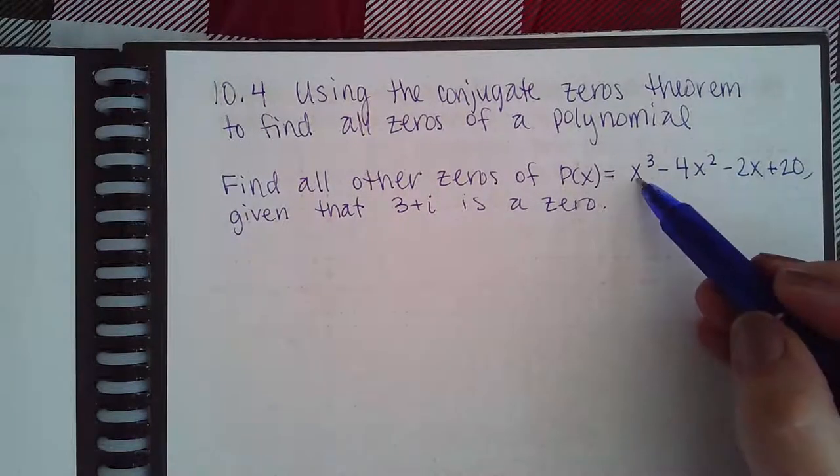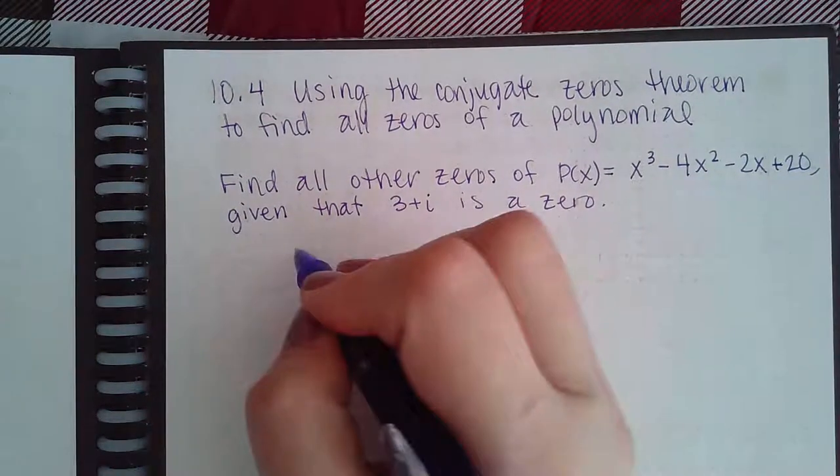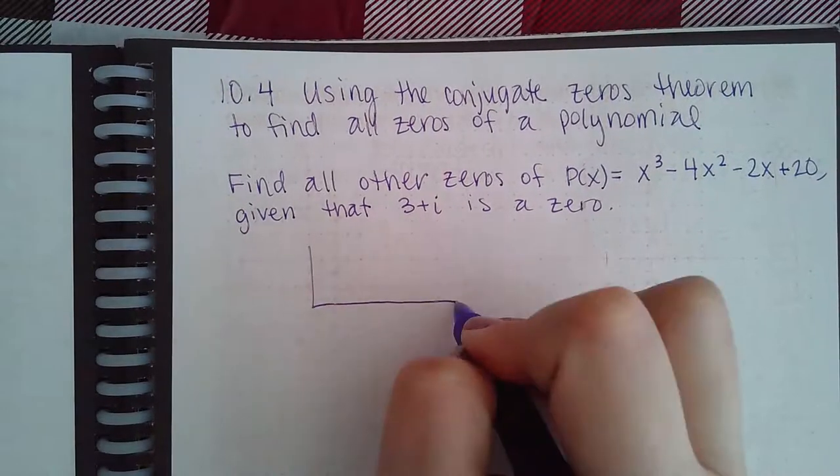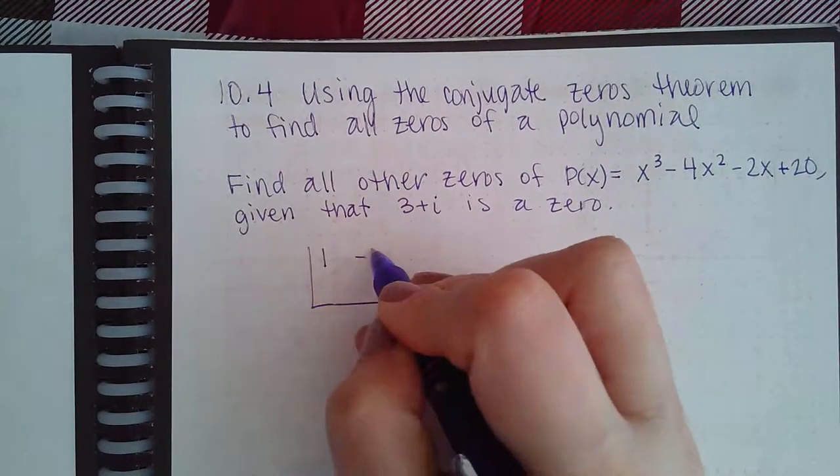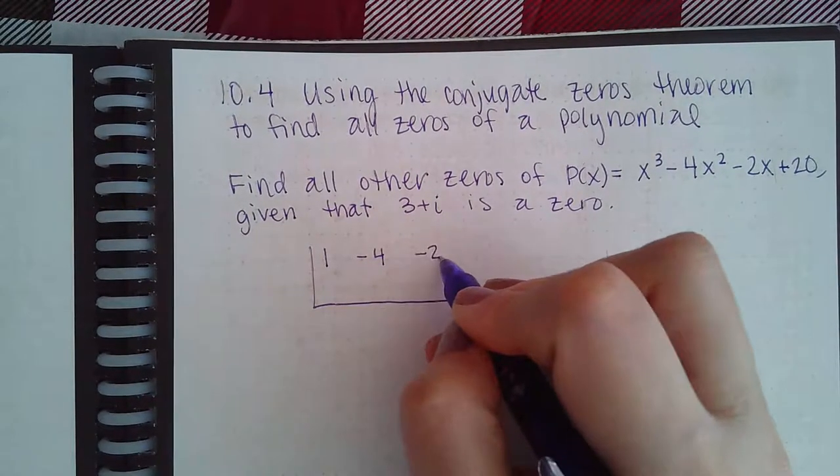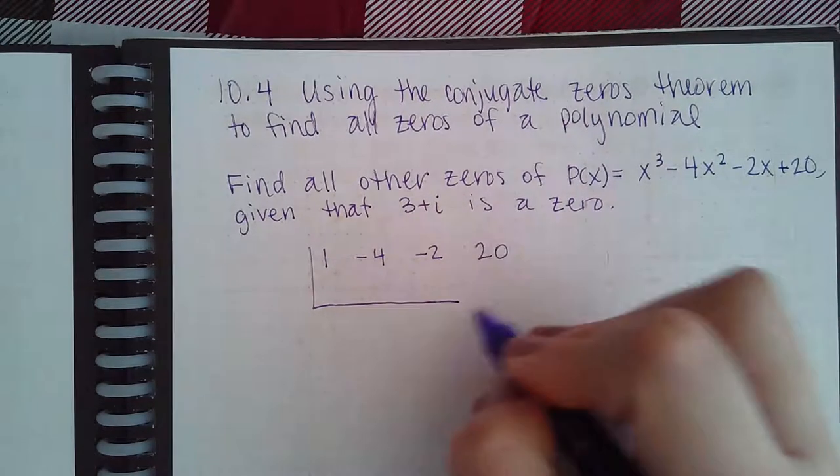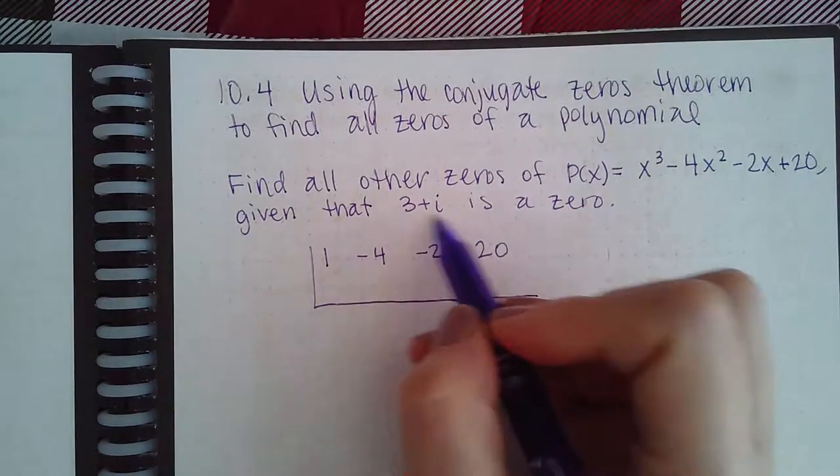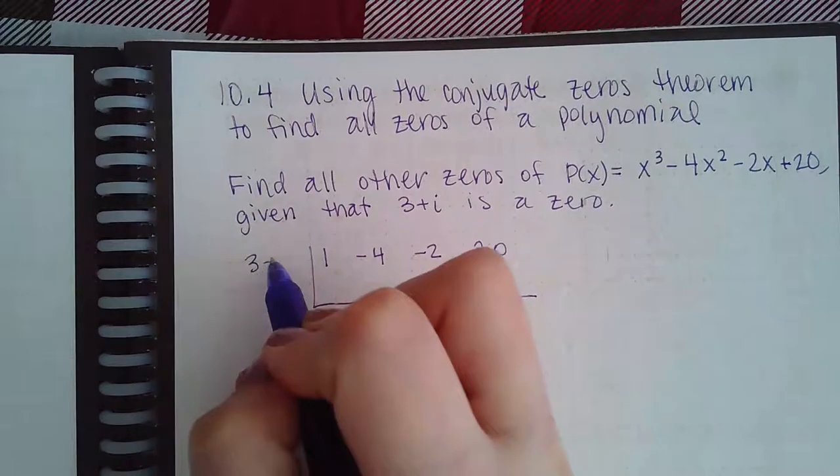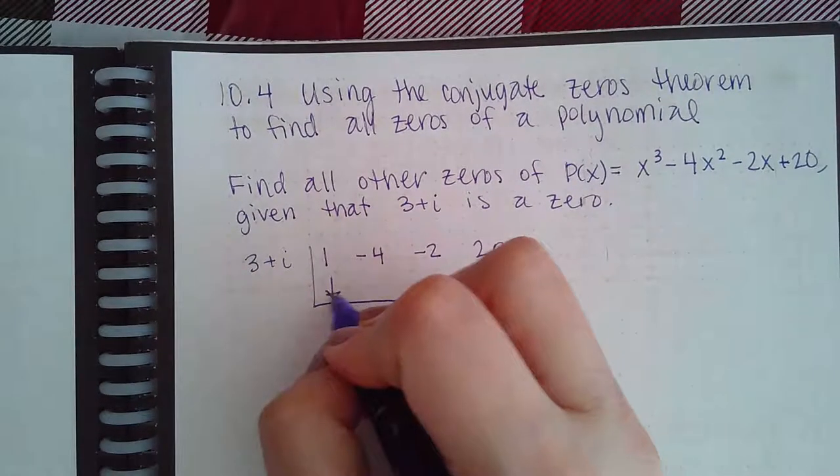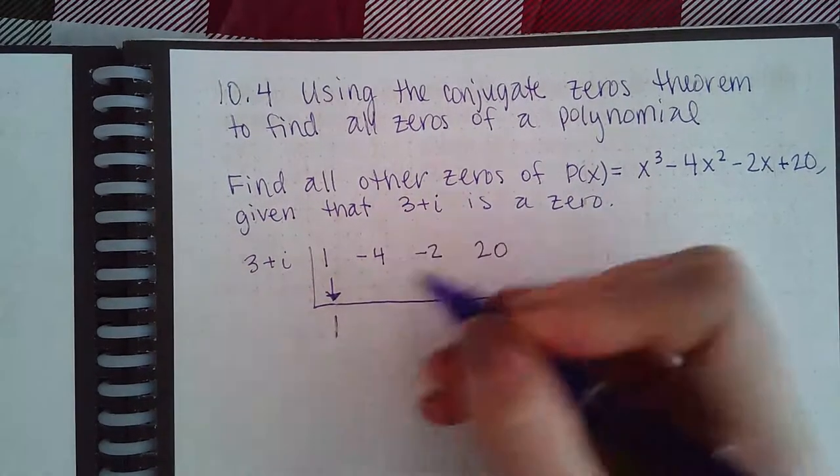For synthetic division, I'm going to use all these coefficients. I'm not missing any terms, so it's just going to be the coefficient 1, negative 4, negative 2, and then positive 20. Then I'm going to use the zero that was given out here on the side. We always bring down the first number.